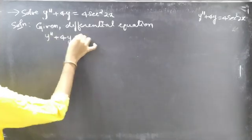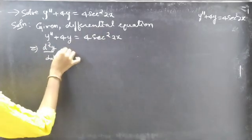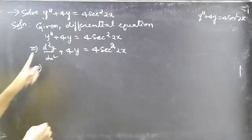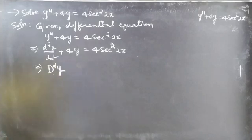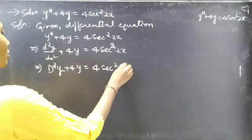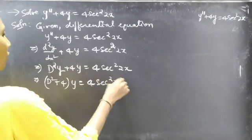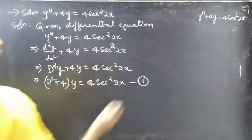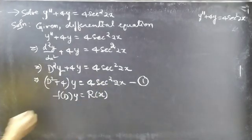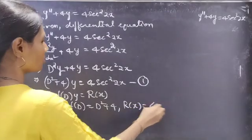The given differential equation is y double dash plus four y equal to four sec squared 2x, or written as d squared y by dx squared plus four y equal to four sec squared 2x. We can write d squared y by dx squared as capital D squared y, where D is a differential operator. So in operator form: D squared plus four, into y equal to four sec squared 2x, which is f of D into y equal to R of x.